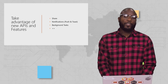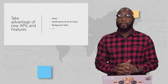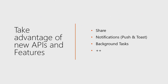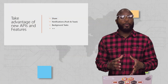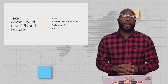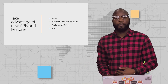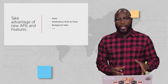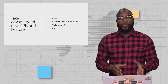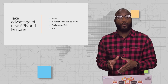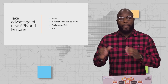Packaging your application as MSIX enables you to take advantage of new features and APIs in the operating system. For example, you can use the Share API where your application can register as a share target or share source. You can also take advantage of notifications, push notifications, toast notifications, and background tasks — APIs you wouldn't have access to without being an MSIX package. Now let's go into Visual Studio and see how simple it is to package your existing code as an MSIX.